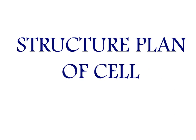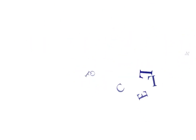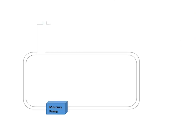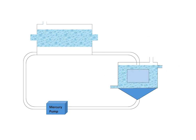First of all we will discuss the structure plan of the electrolytic cell. The electrolytic cell is composed of two chambers: the upper portion or electrolytic cell, and the lower portion or denuder. Titanium anodes are hanged in the upper electrolytic portion, while a flowing layer of mercury at the bottom acts as cathode.